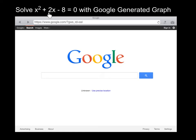x squared plus 2x minus 8 equals 0 is a quadratic equation, and I can solve it with the help of a graph I can generate from Google as follows.